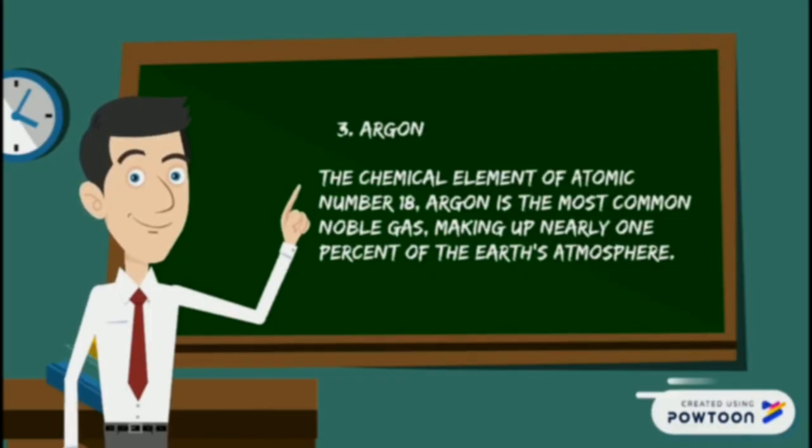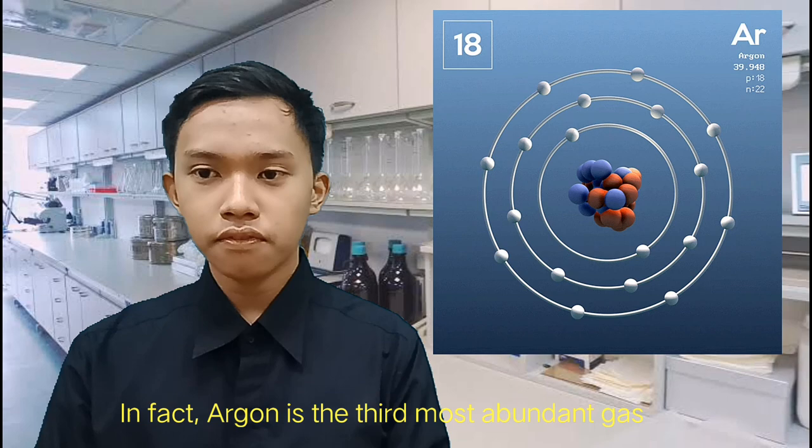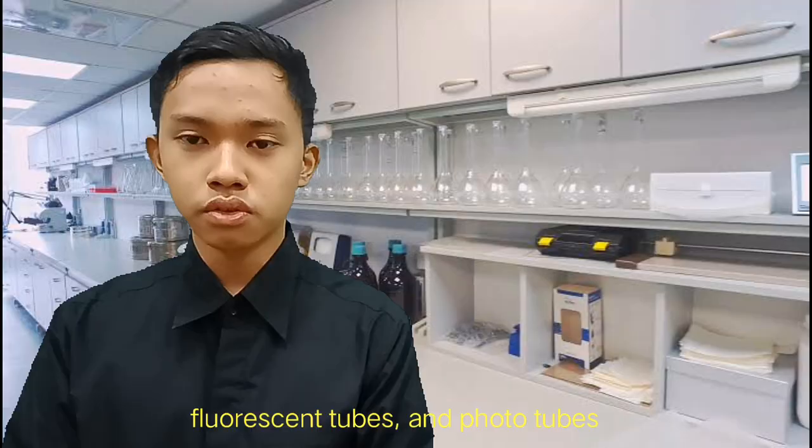Aside from those two, we have argon. Its chemical symbol is Ar and its atomic number is 18. In fact, argon is the third most abundant gas in the Earth's atmosphere. Argon is important for the metal industry, being used as an inert gas shield in arc welding and cutting. Also, argon is used in the electrical light bulb, fluorescent tube, and photo tubes.